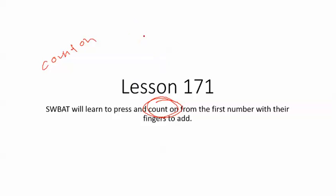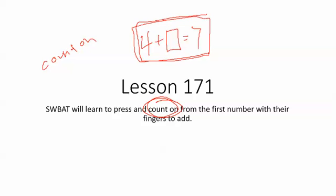Also, it's going to help us with missing addend problems, or what we sometimes call change unknown or mystery change. That counting on helps us because I can solve this problem by counting on my fingers: four, five, six, seven, and getting my answer by what I count on with.